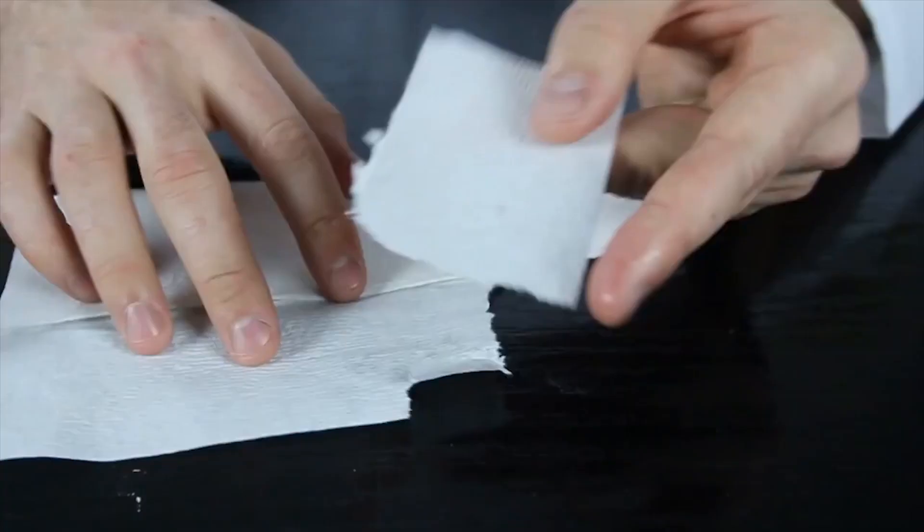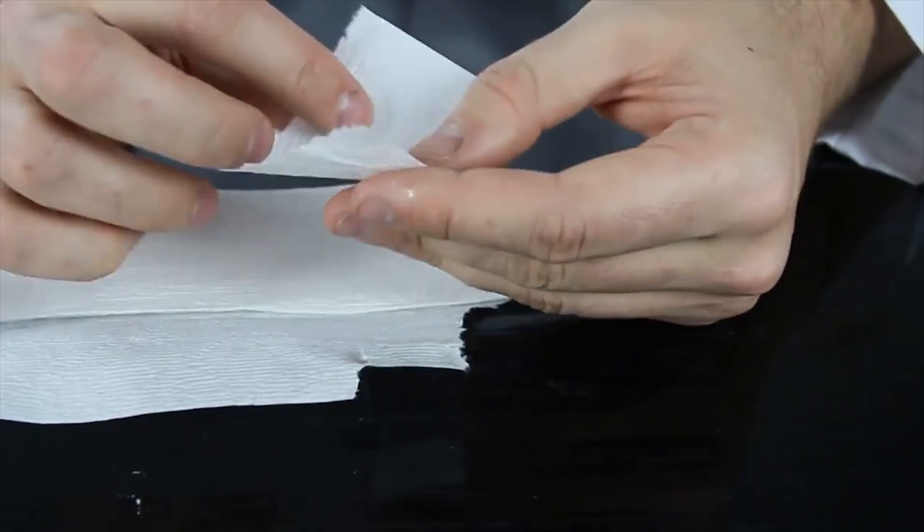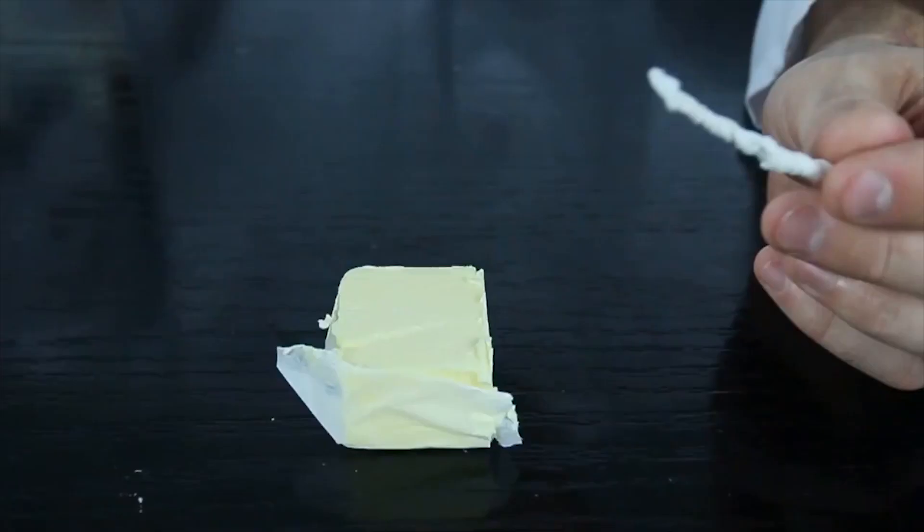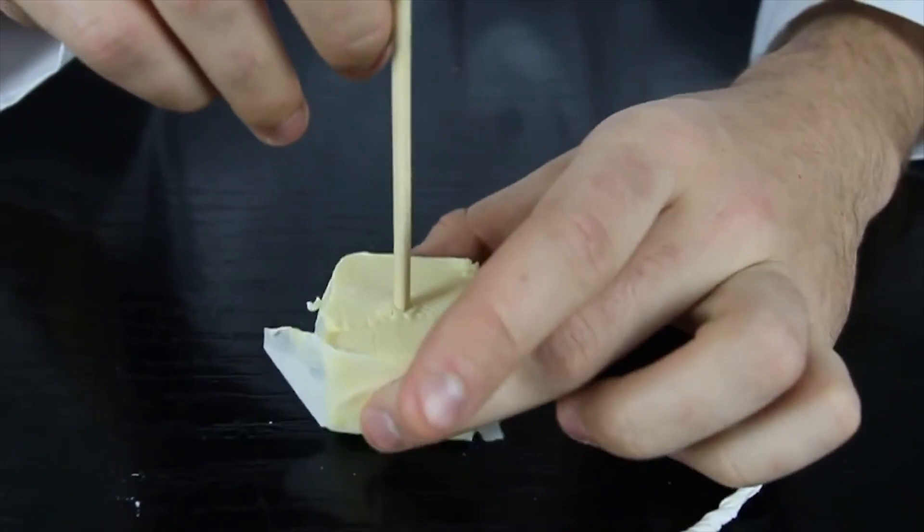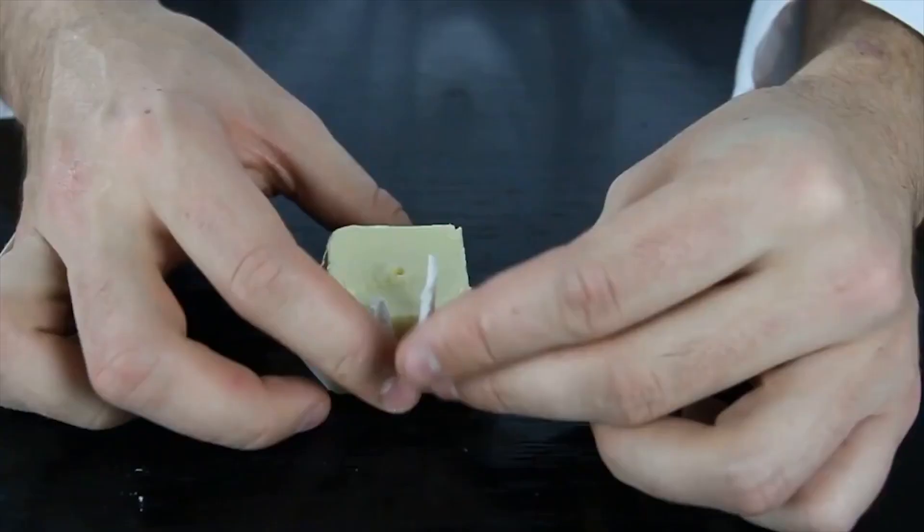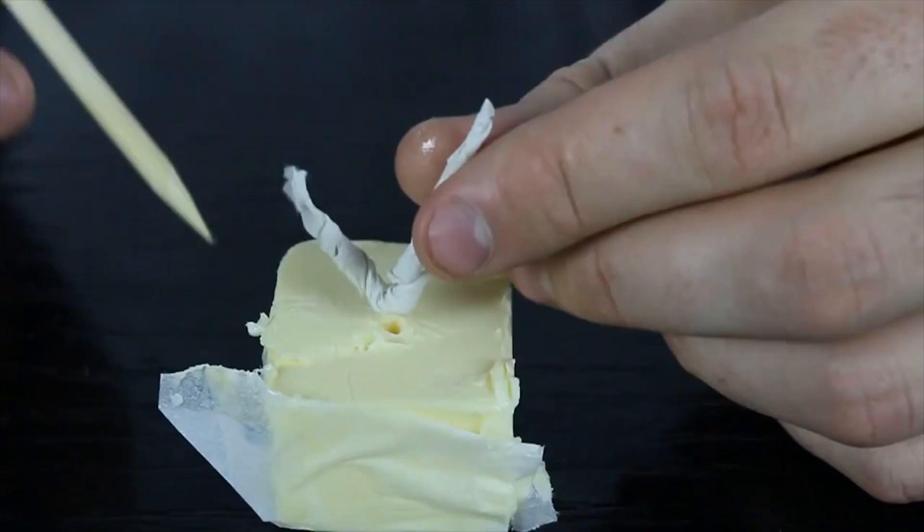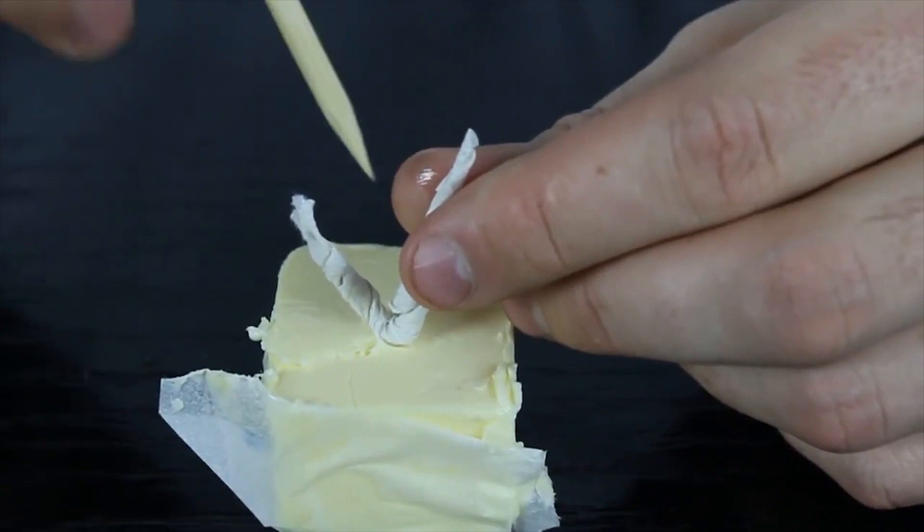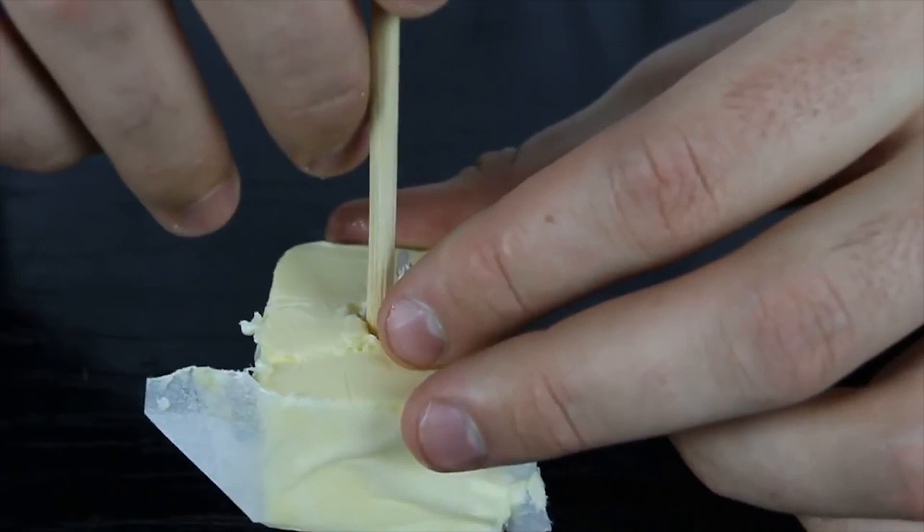I'm gonna show you how to make emergency candle from a piece of butter and a napkin. You're gonna need a knife to cut the butter in half, you can even cut it in four halves. Then grab your napkin and rip off a small piece like that. Then fold it in half, then twist it up. Get a skewer or any kind of stick and make a hole in the middle. It doesn't have to be perfect.